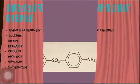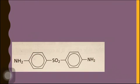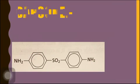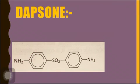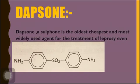Now we will look at Dapsone. Its structure is: NH2 — benzene — SO2 — benzene — NH2. Dapsone is a sulfone which is the oldest, cheapest, and most widely used agent for the treatment of leprosy.